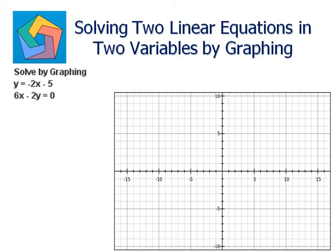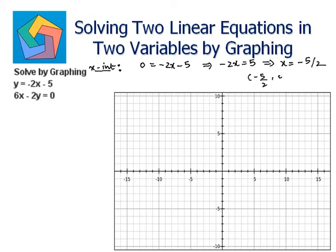Next problem: solve by graphing y is equal to negative 2x minus 5 and 6x minus 2y is equal to 0. For the line y equals negative 2x minus 5, the x-intercept: put y as 0, so 0 equals negative 2x minus 5, giving negative 2x equals 5, so x equals negative 5/2. The x-intercept is (−5/2, 0). For the y-intercept, put x as 0: y equals negative 2 times 0 minus 5, so y equals negative 5. So (0, −5) is the y-intercept.